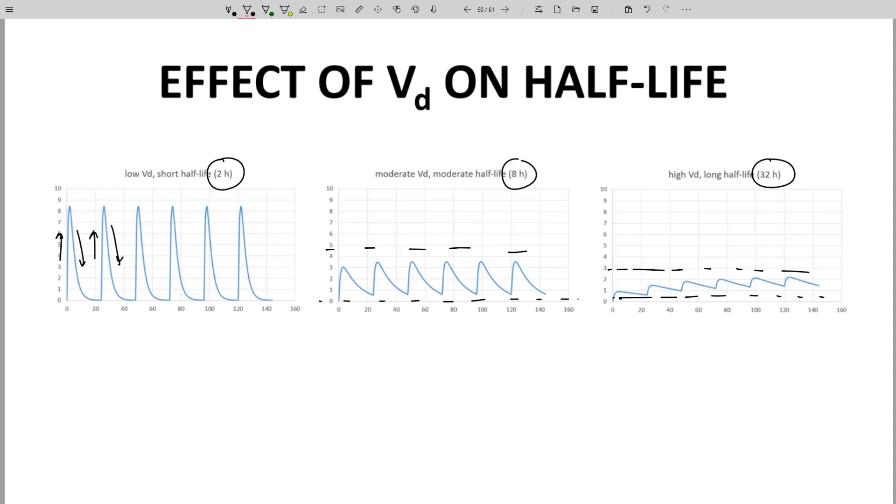From a safety standpoint, a higher VD is much better. It would be very easy to dial in the dose to a fairly narrow range and maintain CP within the therapeutic window if we had a high VD and long half-life.